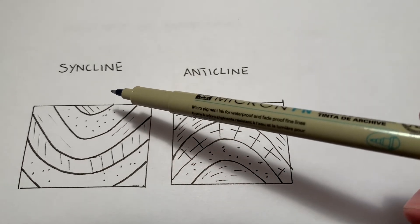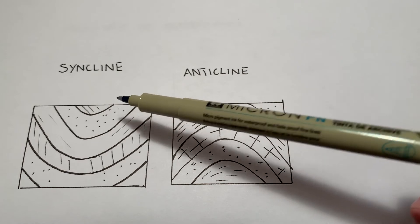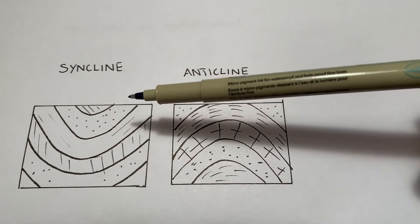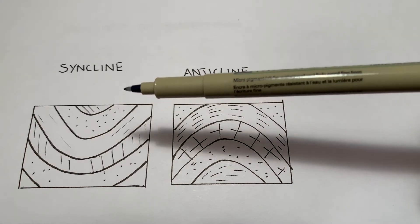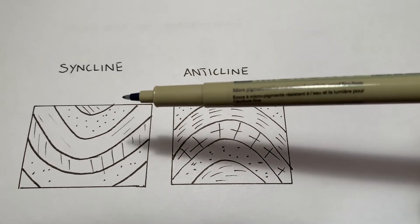This layer here, I didn't label them here, but let's just call that layer A at the very top. That's got to be the youngest, because it indeed was deposited on top of all the others, which means it had to have been deposited after, and then the folding took place.